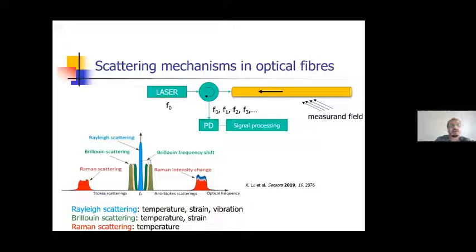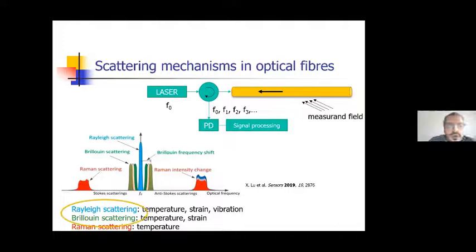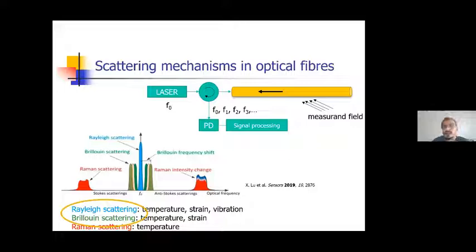As we can see in this slide, Rayleigh scattering can be used to perform temperature, strain, and vibration measurements. Brillouin scattering can be used for temperature and strain measurements, while Raman scattering can be used for temperature measurements. In this presentation we will focus only on the first two mechanisms — Rayleigh scattering and Brillouin scattering — because these two forms of scattering can be observed in single-mode optical fibers, while Raman scattering requires the use of multi-mode optical fibers.